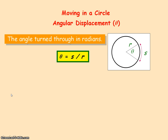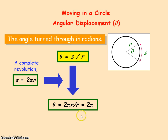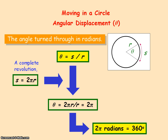If the object completes a revolution, then the distance travelled will be the circumference of the circle, which is equal to 2πr. If we substitute for s into the equation for angular displacement, then you see that the angular displacement will equal 2π for a complete revolution. So 2π in radians is equivalent to 360 degrees.